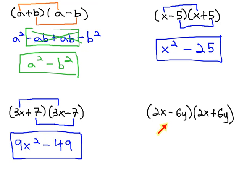Once more, when we have 2x minus 6y times 2x plus 6y, again we notice the factors are exactly the same except one has a plus and one has a minus. Because this is the case, we multiply the first terms together, 2x times 2x to get 4x squared, and the last terms together, negative 6y times positive 6y to get negative 36y squared.